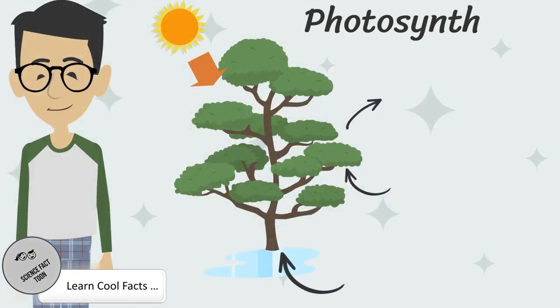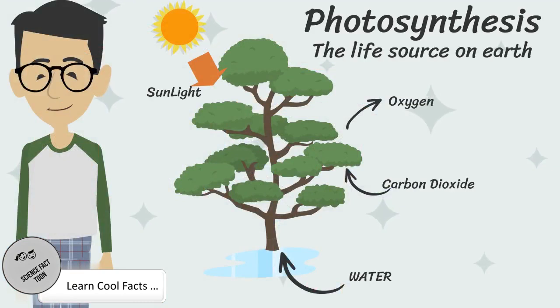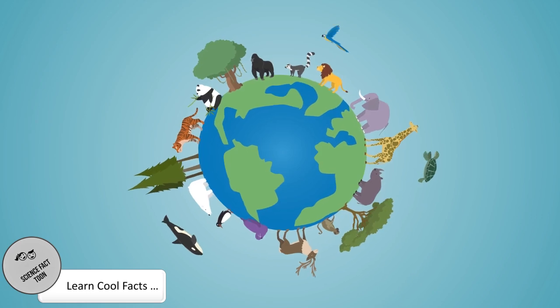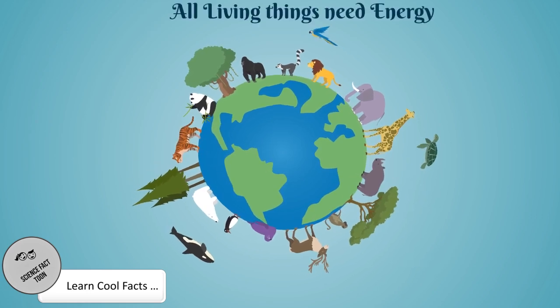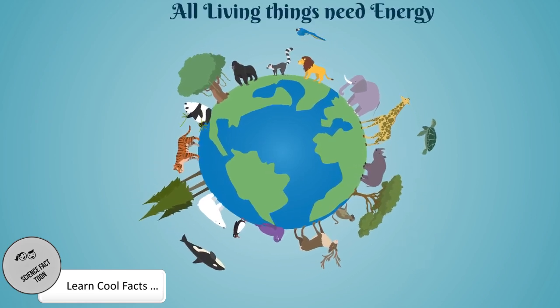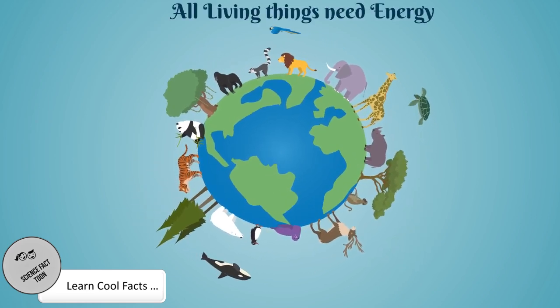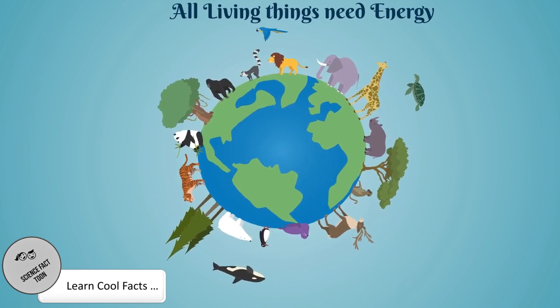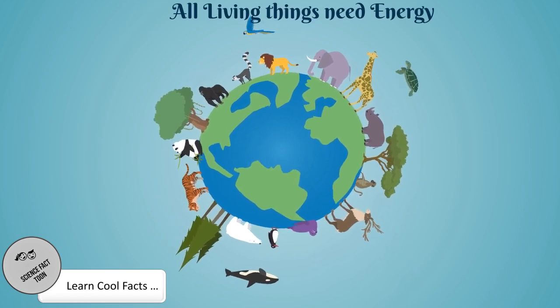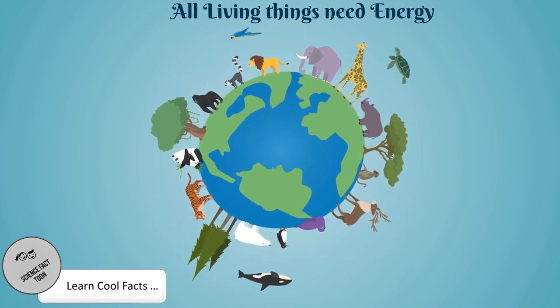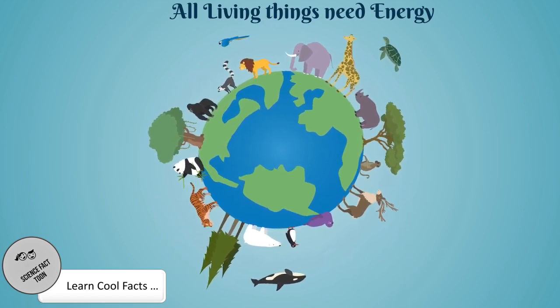Photosynthesis — the life source on Earth. All living things on Earth need energy to survive. All animals are dependent on each other for their survival. For example: